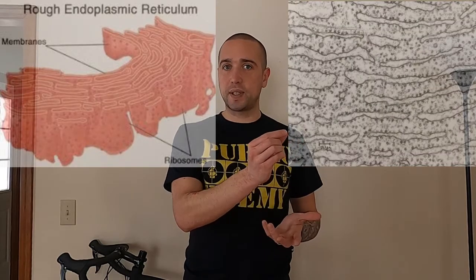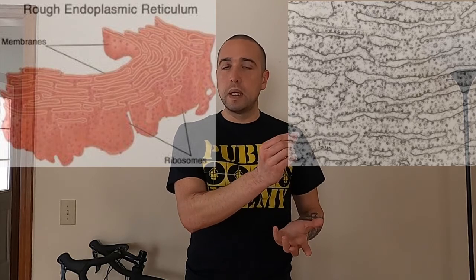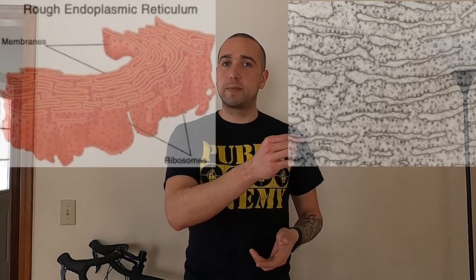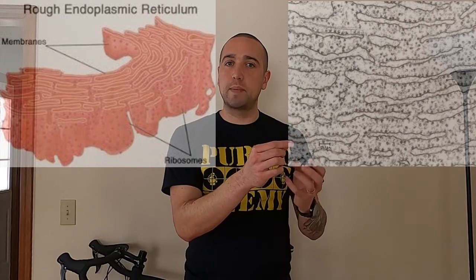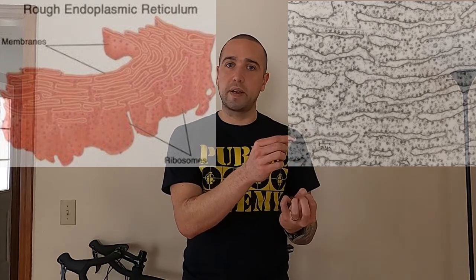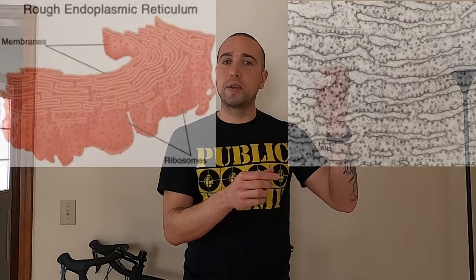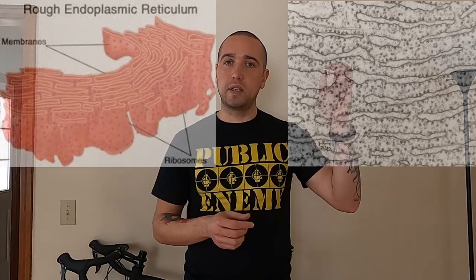Ribosomes can either be free-floating, where they make proteins that stay inside the cell, or they might be stuck on the rough endoplasmic reticulum. If they are stuck on the rough ER, then the proteins they make are going to go into the rough ER and eventually get transported out of the cell.